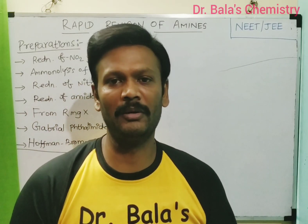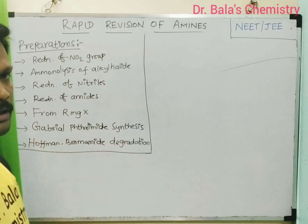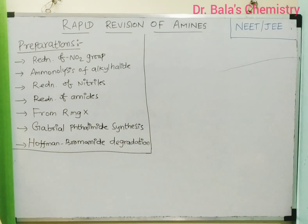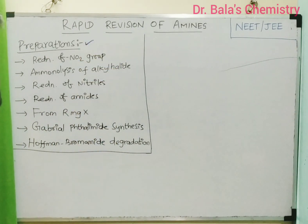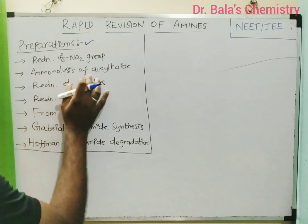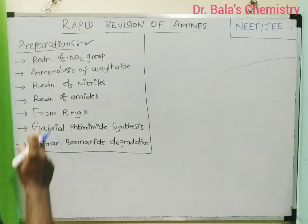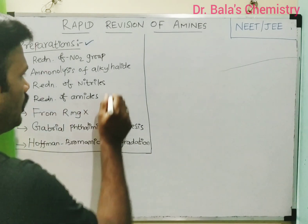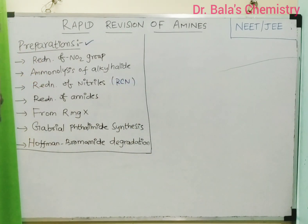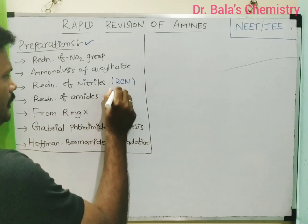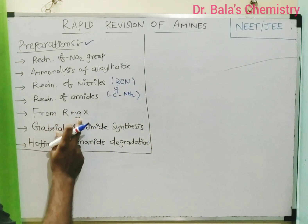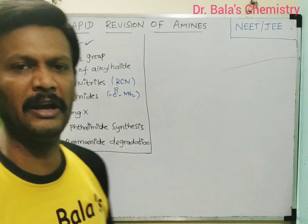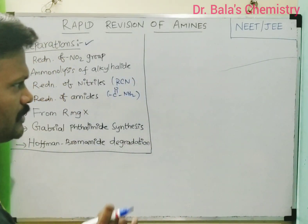When we talk about rapid revision of amines, it's a very important topic for NEET as well as JEE. First, we talk about preparation. Preparation methods include: reduction of nitro group, ammoniolysis of alkyl halide, reduction of nitriles (R-C≡N), reduction of amides, Grignard reagent method, Gabriel phthalimide synthesis, and Hofmann bromamide degradation. This last one is a very important method.